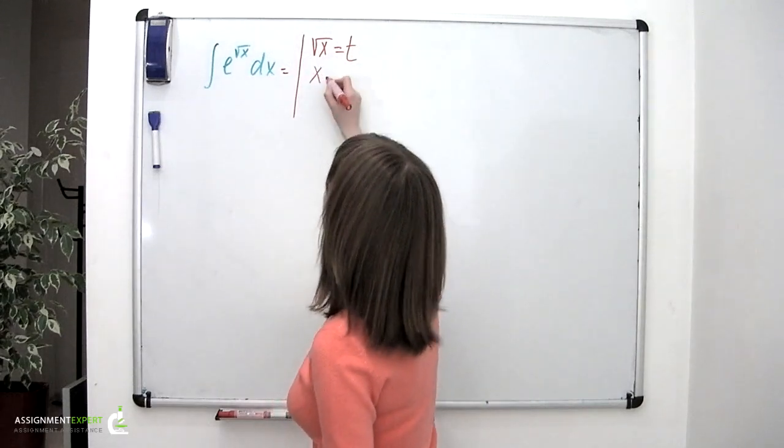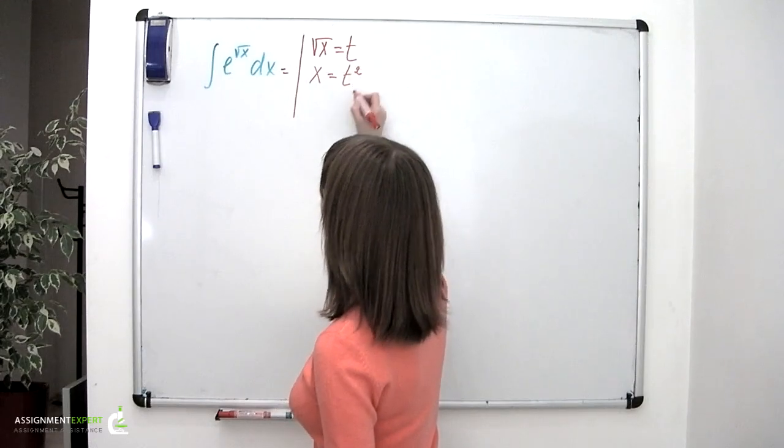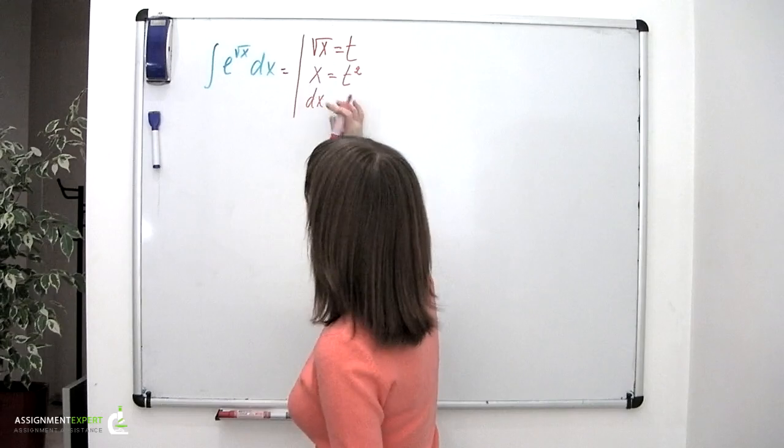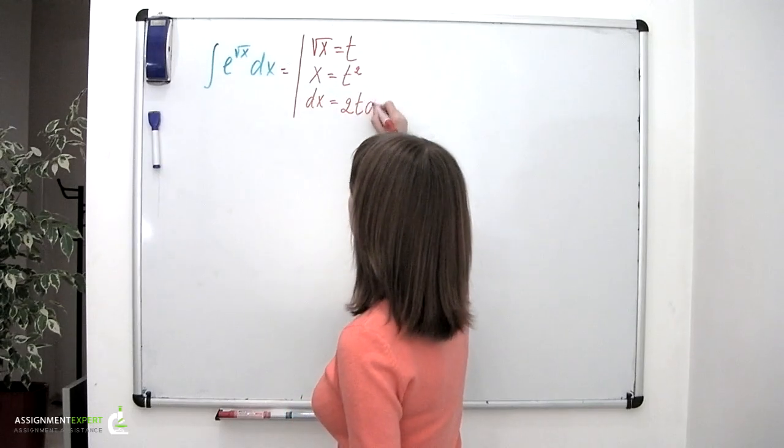So we'll have x equal to t squared and dx equal to 2t dt.